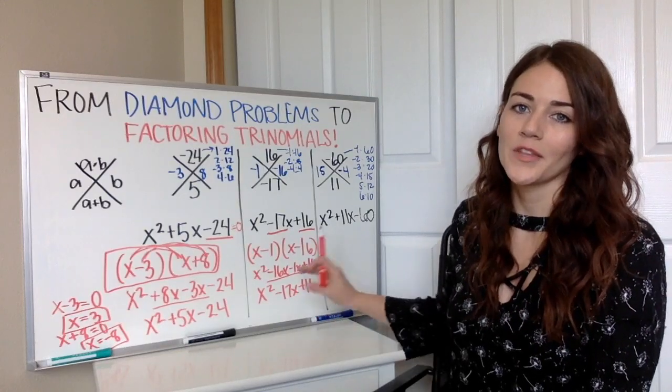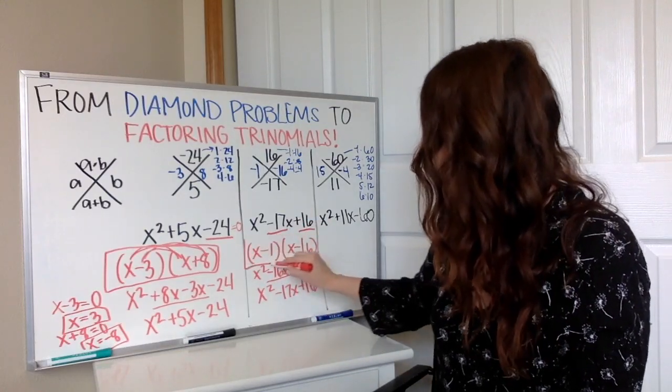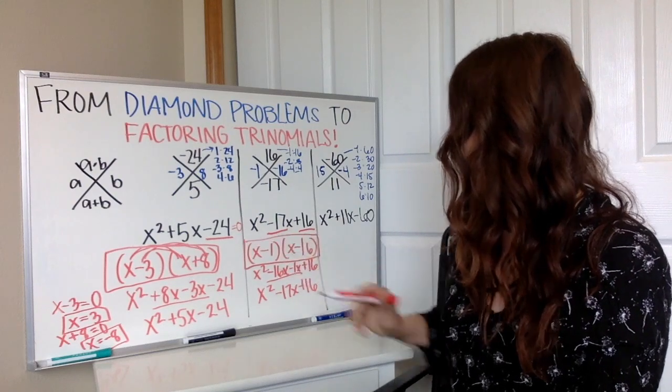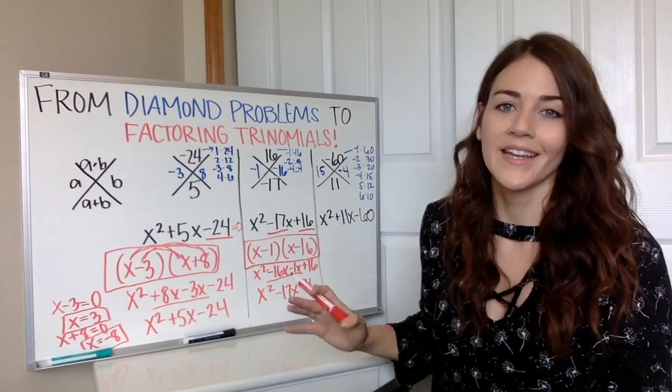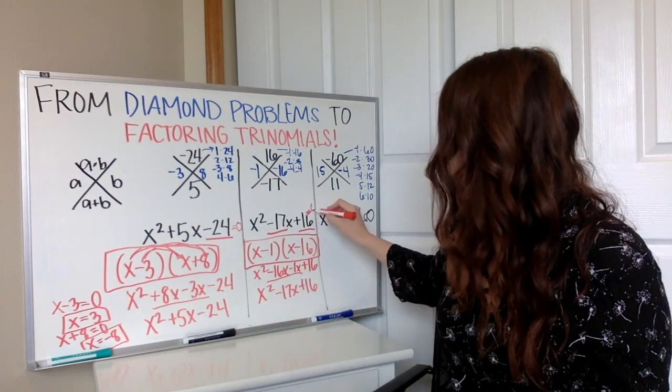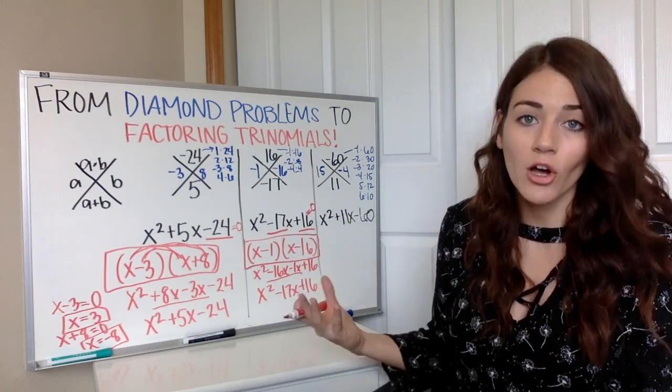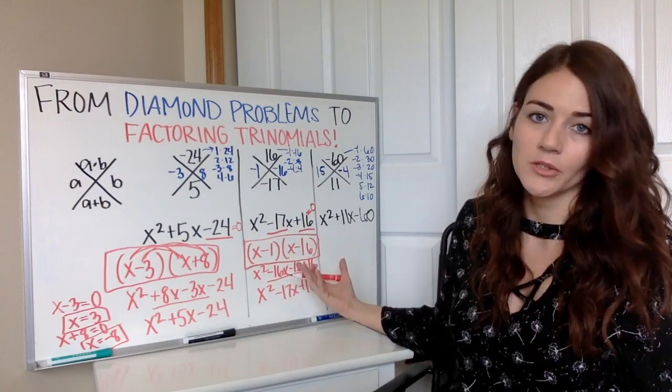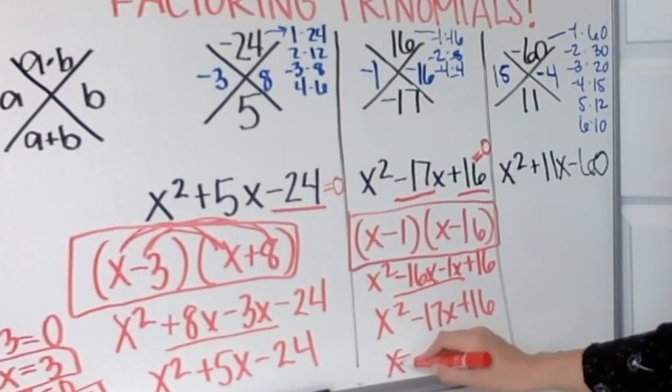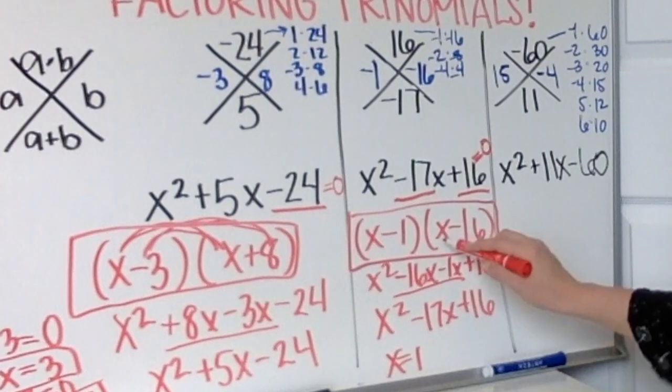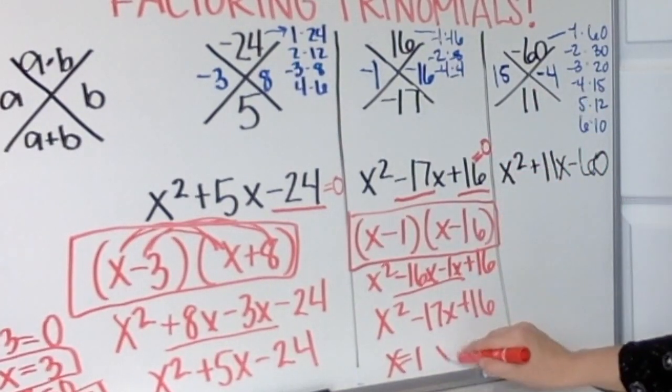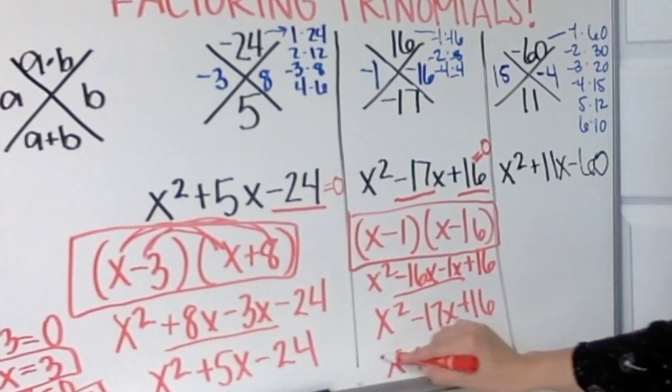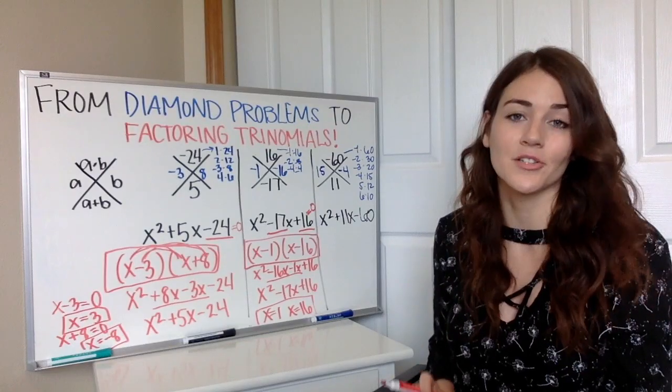We ended up with the same thing so our factored version would be x minus 1 times x minus 16. And again, if this was your expression and it was equal to zero and you were being asked to solve, you would then just say x minus 1 equals 0, so x equals a positive 1. x minus 16 equals 0, you add 16 to both sides, x equals positive 16. So that would be my solution.